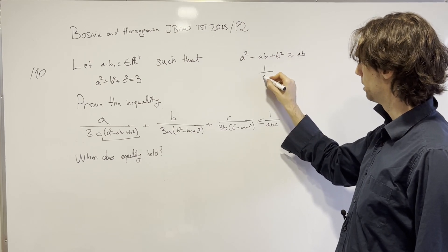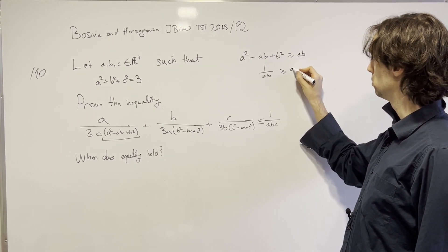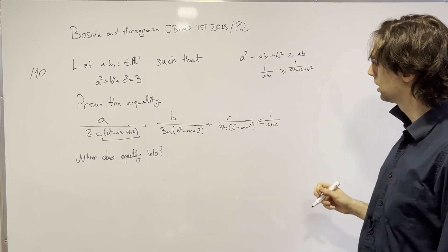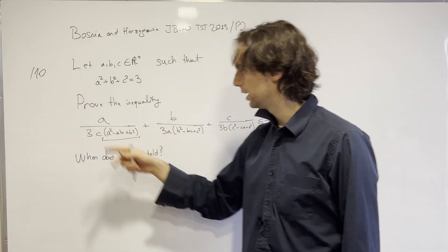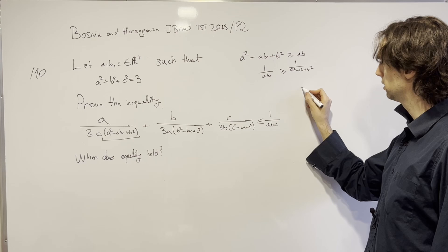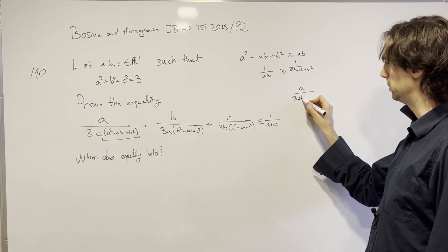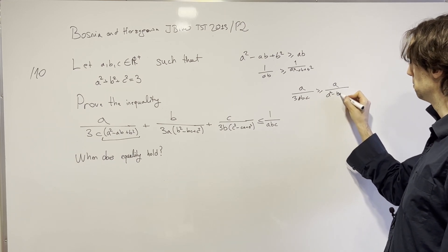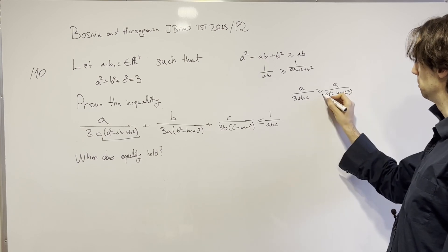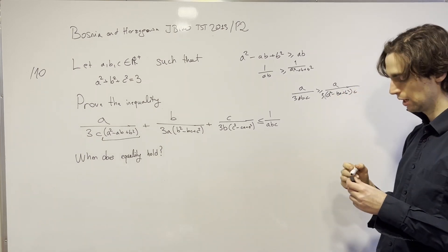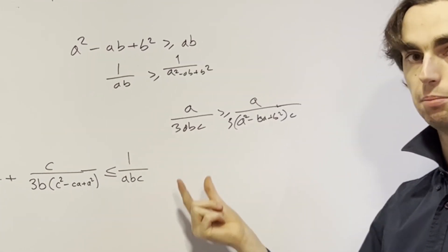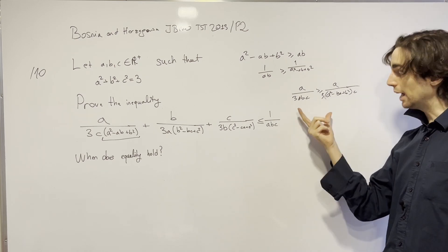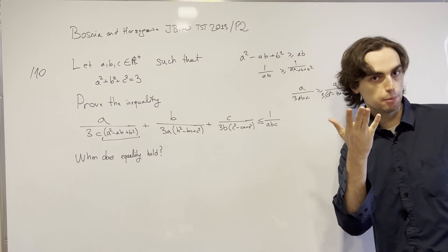And so we know that 1/ab is greater than or equal to 1/(a²-ab+b²). And when we multiply it by a/3c, we get a/(3abc) is greater than or equal to a/((a²-ab+b²)·3c). Now what is cool about this estimate? I invite you to pause for two minutes and ask yourself, why is this estimate cool? And the answer, though coolness is in the eye of the beholder,